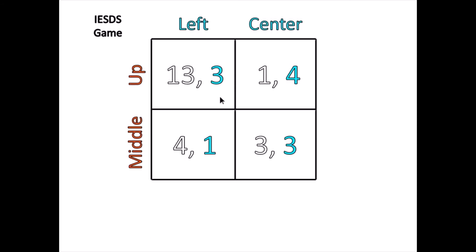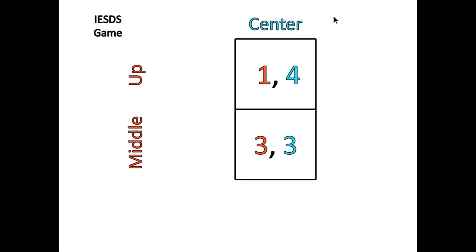Why would player 2 never want to play left? If player 1 plays up, center is better than left: 4 is greater than 3. And if player 1 plays middle, center is again better than left because 3 is greater than 1. So the left strategy is no longer sensible for player 2 — only center is sensible. Player 1 knows player 2 won't play right, which causes him to never play down, which means she infers he's never going to play down, which means she's never going to play left, leaving her with center.